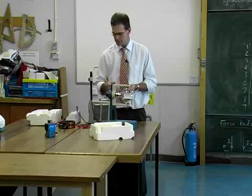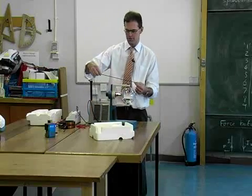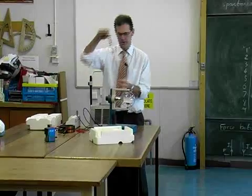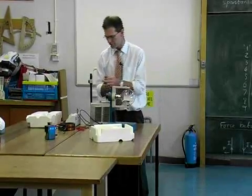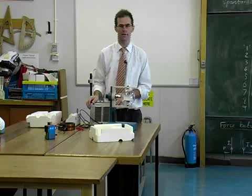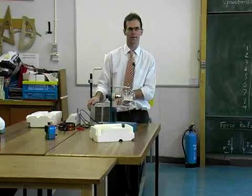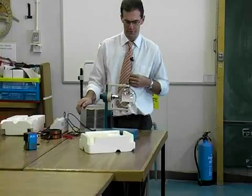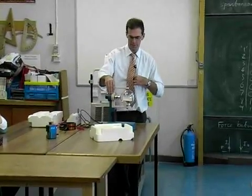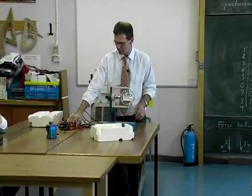You would think it would, because if you've got a conductor which has got moving charges going through it, and that experiences this force that we observed last week, surely if you've just got a single charge, like an electron, an alpha particle, and you put that in a magnetic field, it should experience a charge. So I'm just going to do a bit of theory first, and then we'll actually see what happens when we put some electrons into a strong magnetic field.